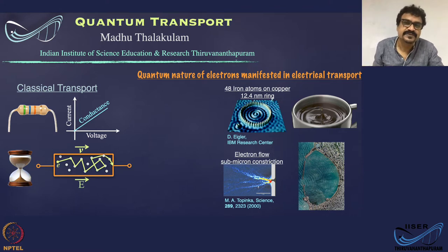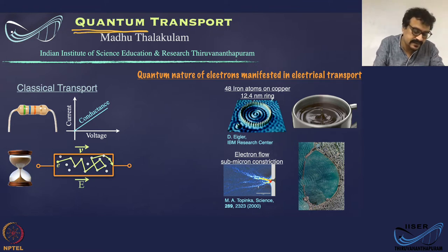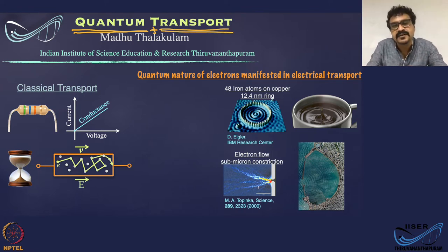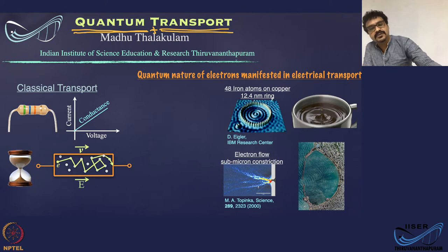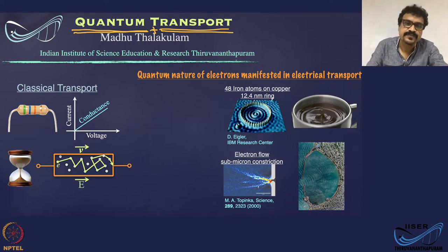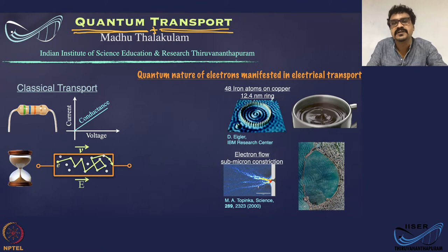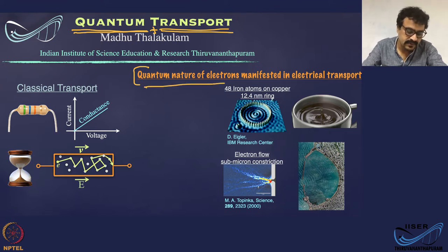Quantum transport means quantum mechanics plus transport. Transport in physics generally refers to electrical transport or transport of charge carriers such as electrons or holes through a system. When we say quantum transport, it actually means the manifestation of the quantum nature of electrons in transport.